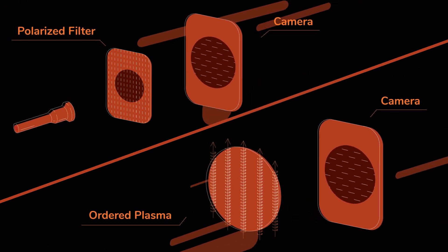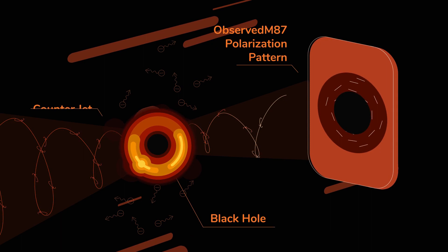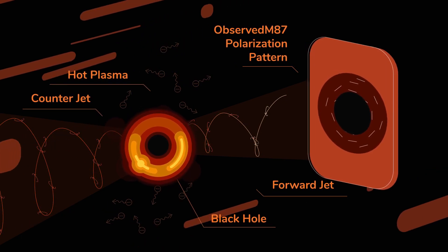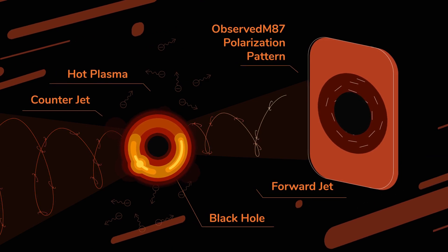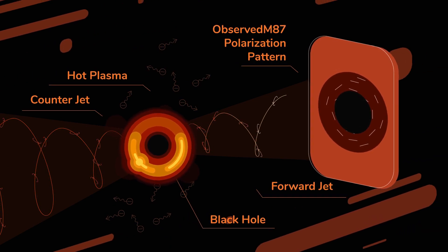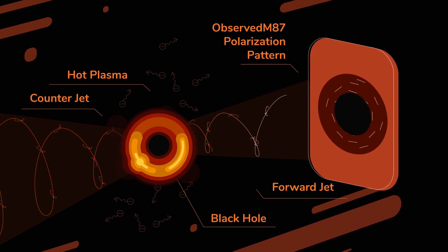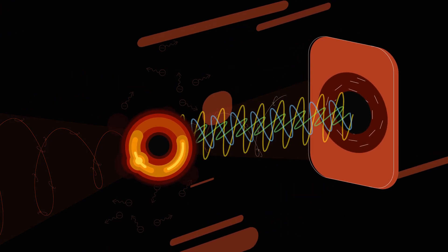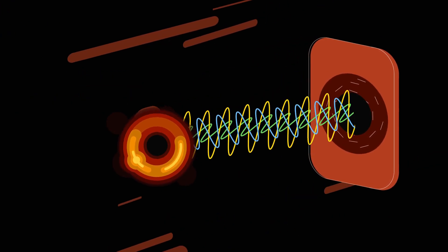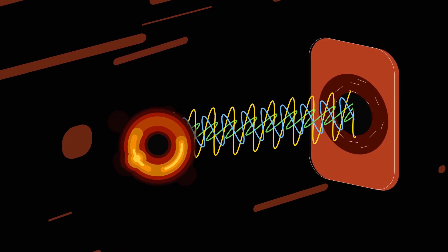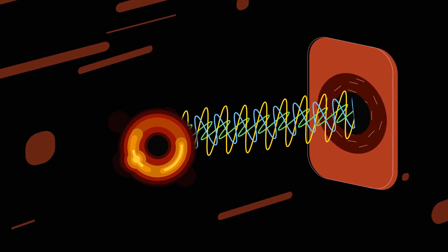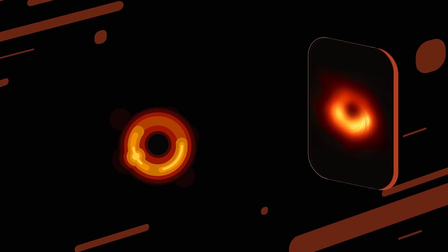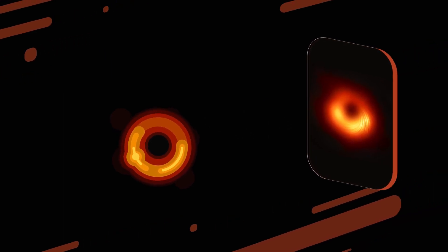The strong gravity near a black hole bends the magnetic field and twists the polarization direction of the light from the surrounding plasma. The polarized light rays that manage to escape travel to a distant camera. The intensity of the light rays and their direction are what we observe with the Event Horizon Telescope. Using this knowledge, we can map out the magnetic fields that surround black holes.